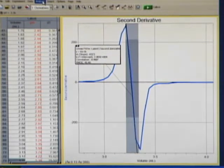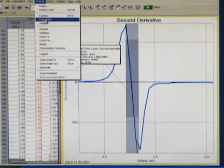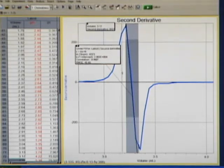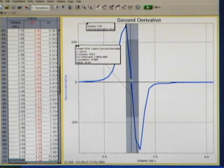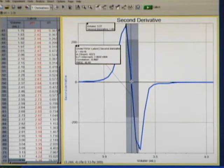I then go to Analyze and Interpolate, which will interpolate along that curve fit line. And if I carefully move that around until my derivative is as close to zero as I can get it, right there, my volume is 3.27. That is the best number we can get for the equivalence point of that titration.